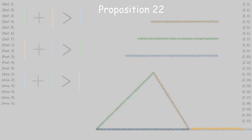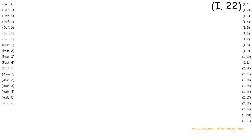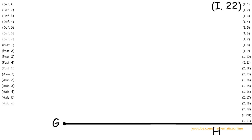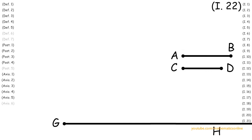To begin this proposition, we are given line GH of arbitrary length, and we are also given line AB, line CD, and line EF. These three lines must satisfy the conditions of Proposition 20, which means that the sum of any two lines should always be greater than the remaining line.